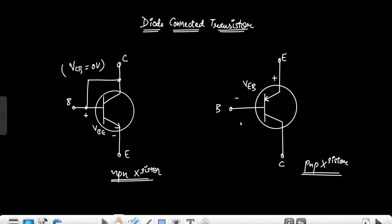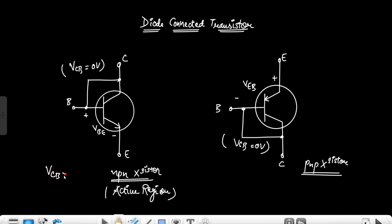When we short circuit the base and collector, VCB is equal to zero volts. Just as in a MOSFET when gate and drain are short-circuited the MOSFET always lies in the saturation region, similarly, the transistor when base and collector are short-circuited always lies in the active region, because the condition for the active region is that VCB should be greater than or equal to zero volts. So VCB equals zero, and that's why it always lies in the active region. The active region is the amplifying region of BJT, and similarly the saturation region is the amplifying region of the MOSFET.